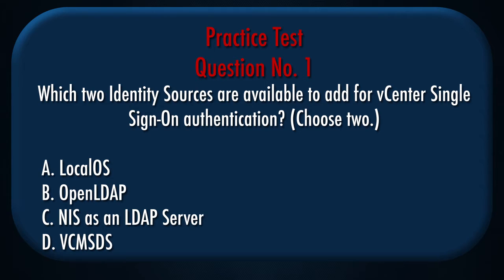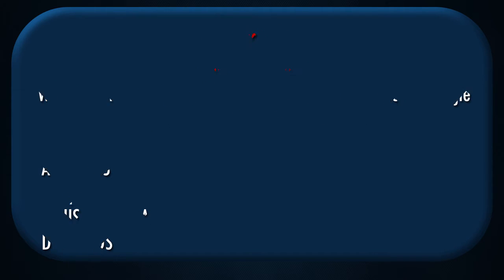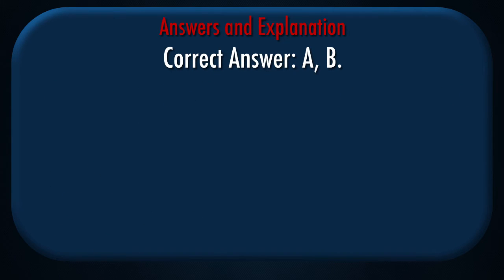Question number 1. Which two identity sources are available to add for vCenter Single Sign-On Authentication? Choose two. A. Local OS. B. Open LDAP. C. NIS as an LDAP server. D. VCMSDS. Correct answer: A, B.